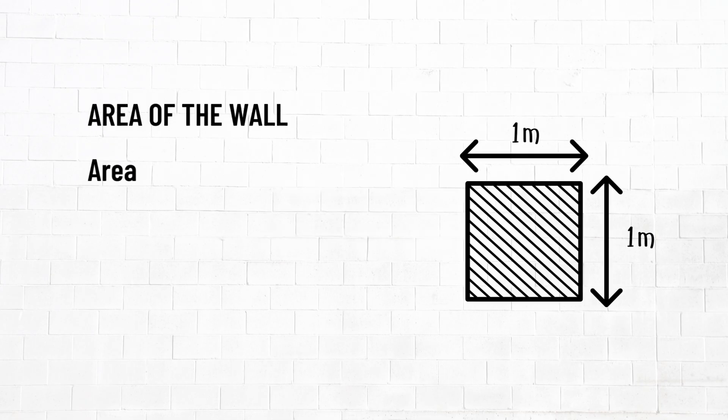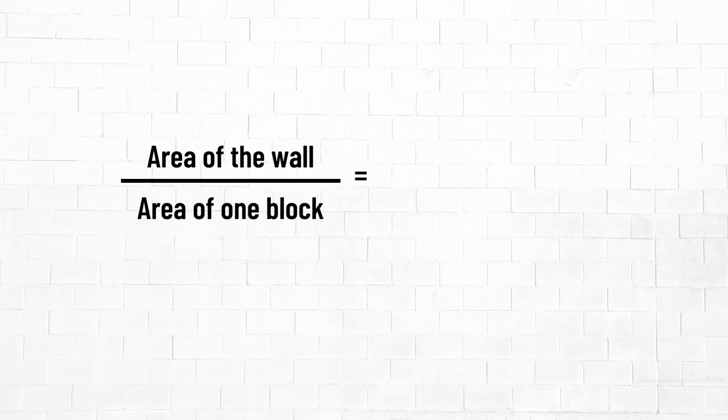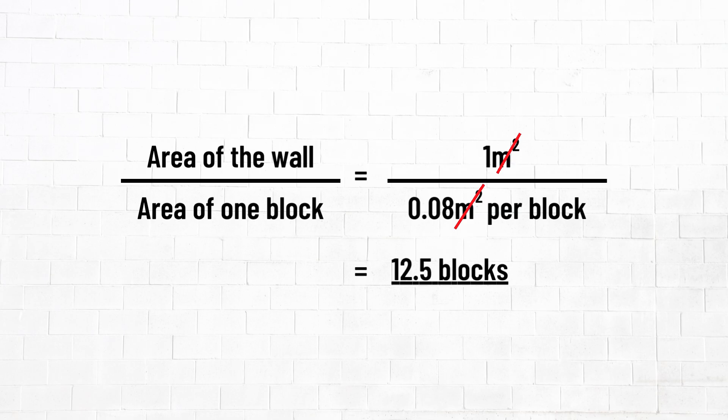All we need to do is divide the area of the wall by the area of the block. Area of the wall is equal to 1 meter by 1 meter, which is equal to 1 square meter. How many blocks go into it? We divide 1 square meter divided by 0.08 square meters, which is equal to 12.5 blocks or 12 and a half blocks.